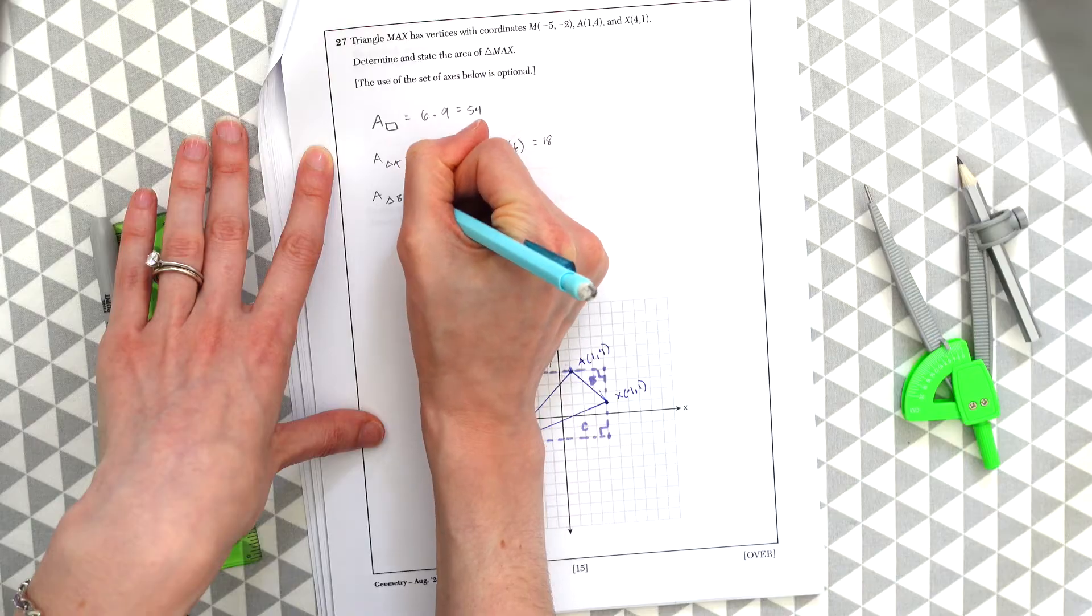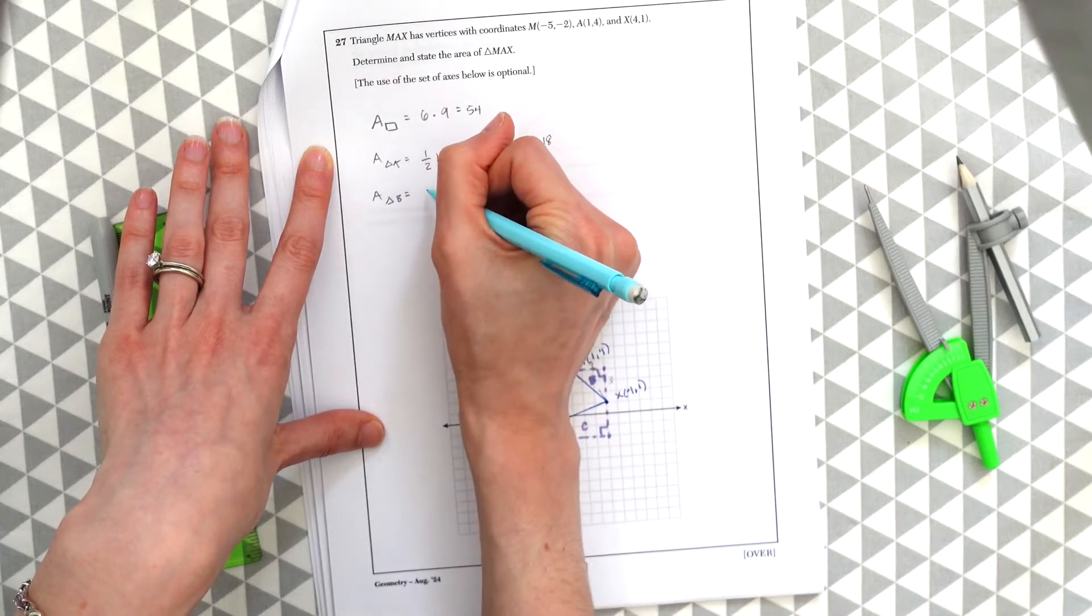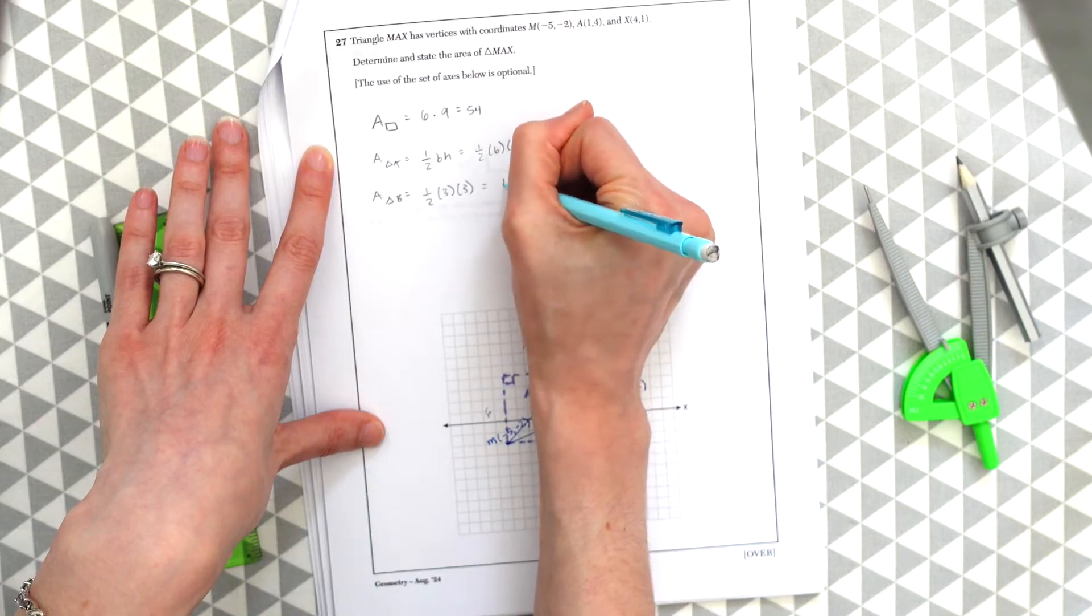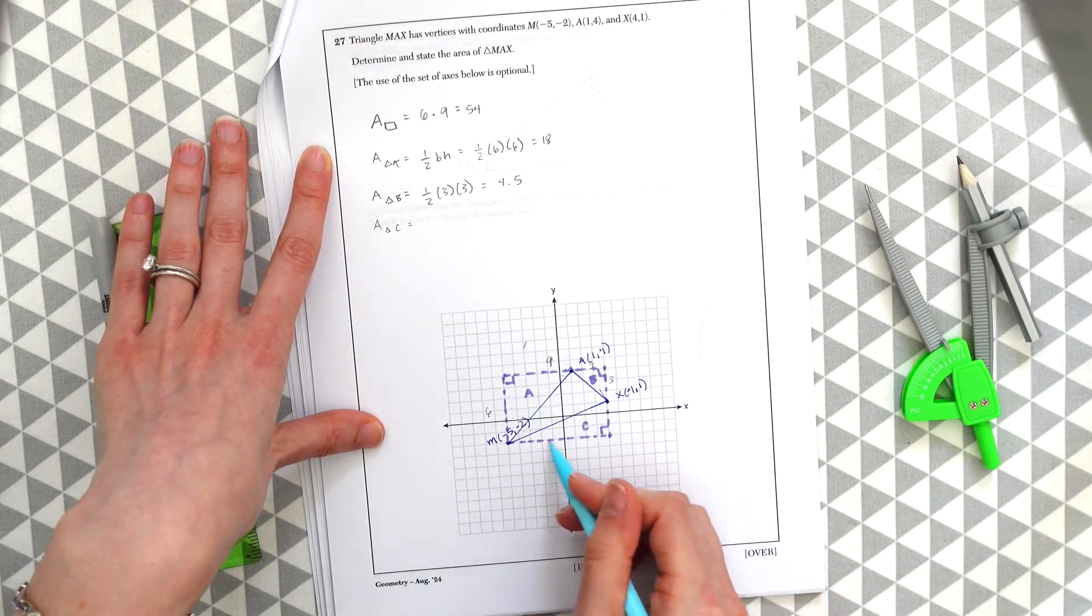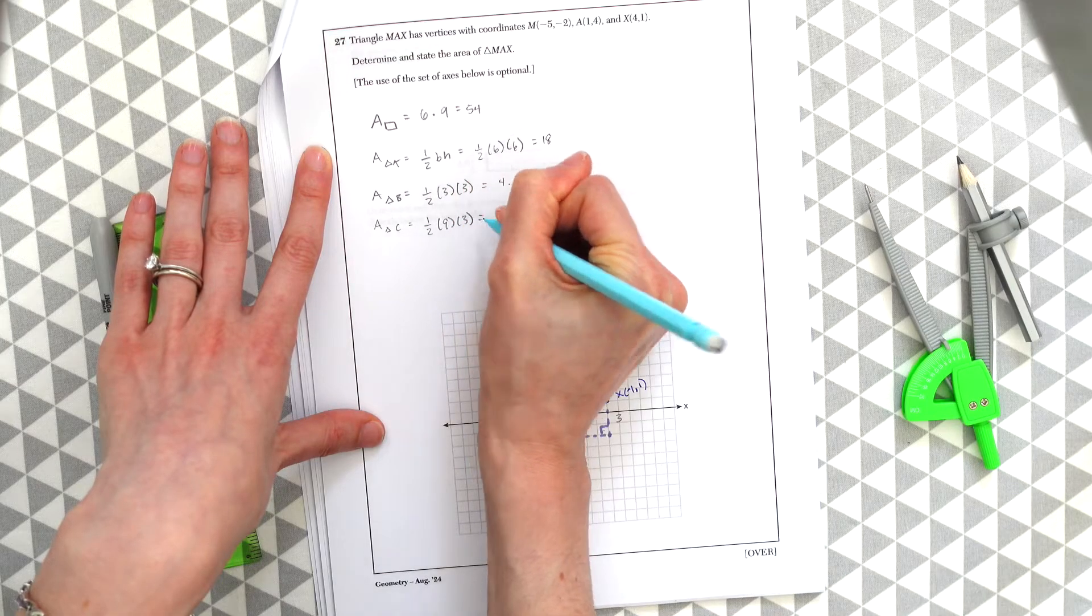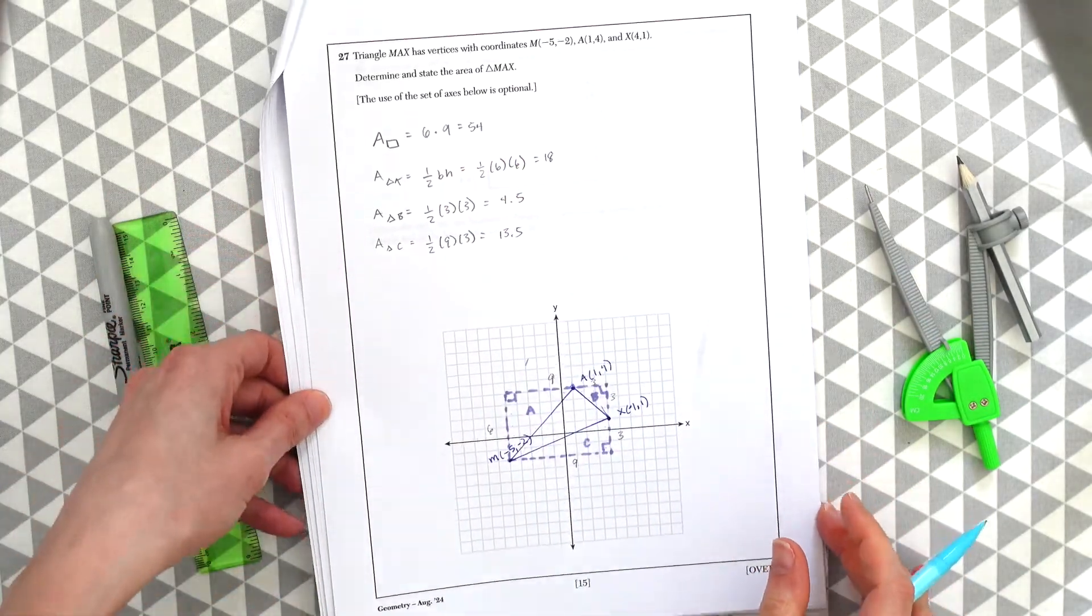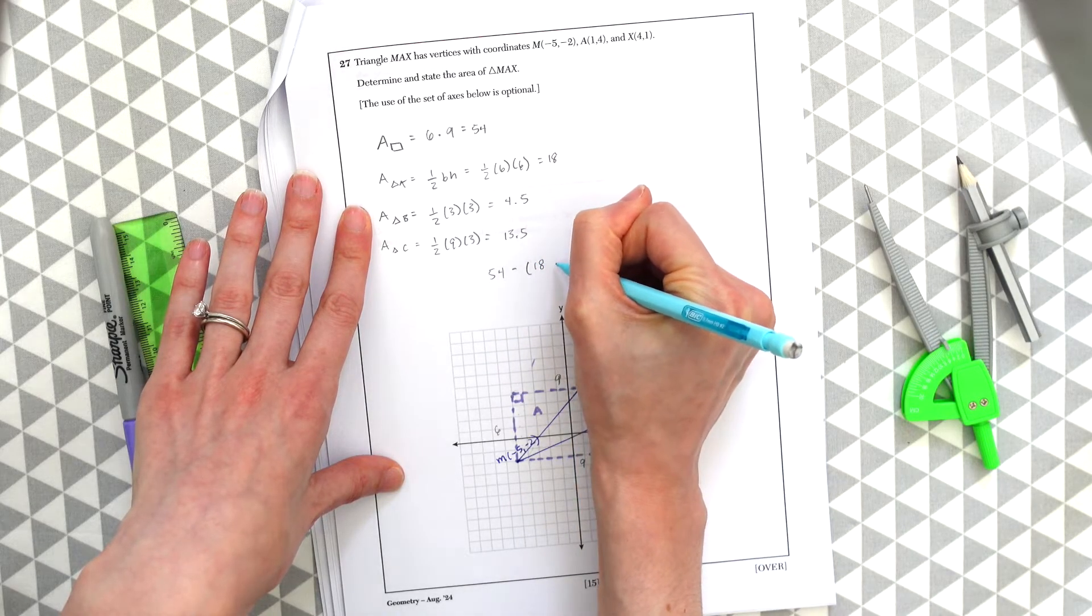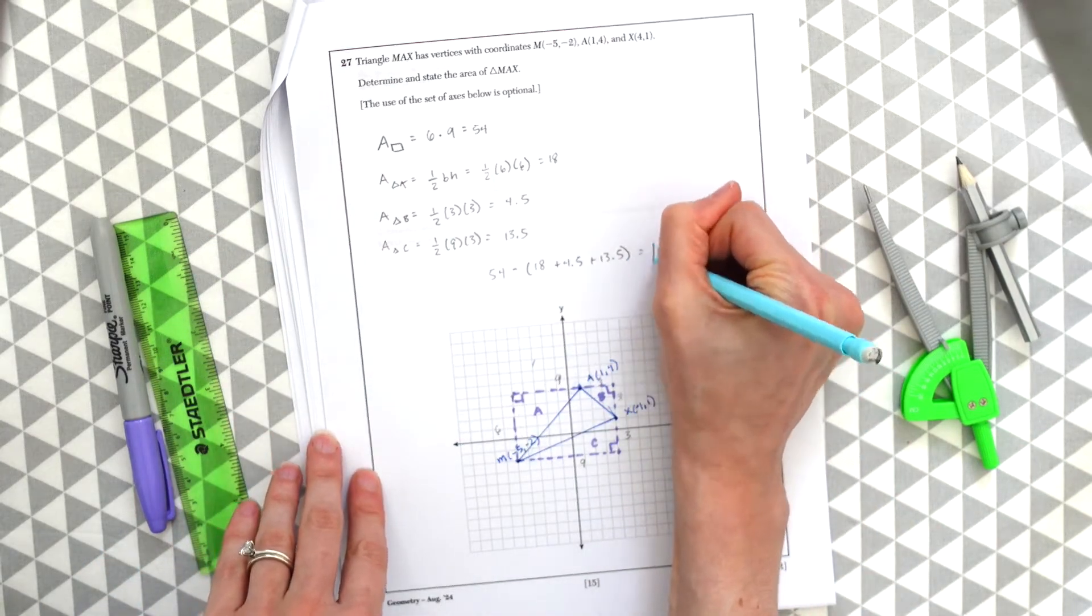Now let's find the area of triangle B over here. Notice this is going to be 1, 2, 3, 1, 2, 3. So this will be one half times 3 times 3, which will give us 9 divided by 2, which will just be 4.5. Now the last triangle, triangle C, this whole side is 9, and then this side is 3. So we have one half times 9 times 3, which will just give us 13.5. So now what we're going to do is take the area of the rectangle, the whole shape, which is 54, and then we're going to subtract all the other triangles we found in here. So we have minus 18 plus 4.5 plus 13.5. And you can plug this in the calculator and you'll see that we get 18, which is our answer for this question.